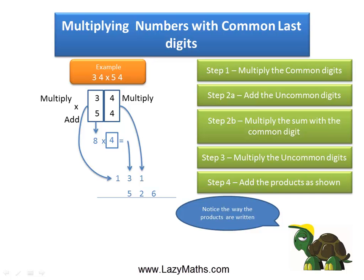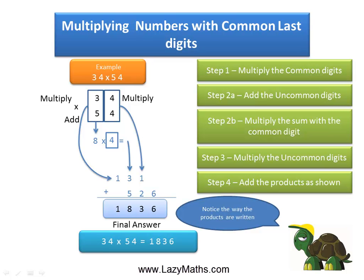Finally, we add all these digits up together. 6 comes in as it is. 1 plus 2 is 3. 3 plus 5 is 8, and the 1 comes in as it is. So we get 1, 8, 3, 6 as our final answer. Hence, 34 times 54 equals 1836.